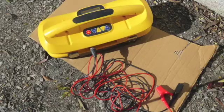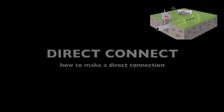There are three ways to connect the transmitter to the line. The first is a direct connection, which is most effective when possible.